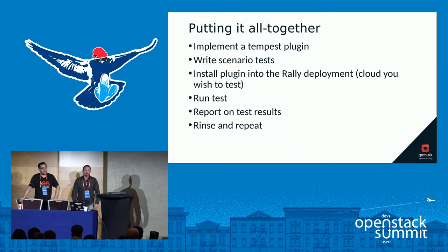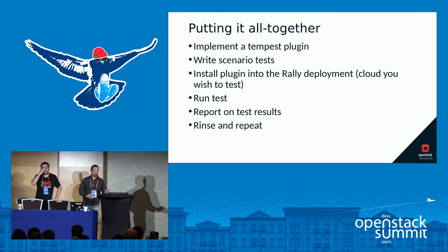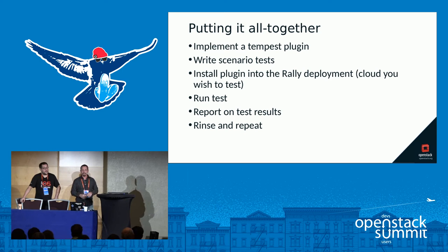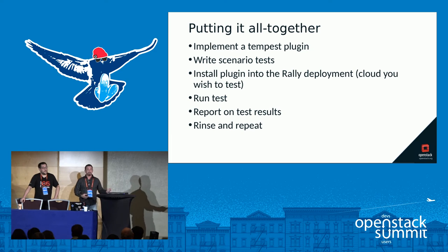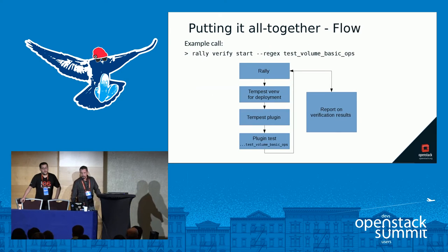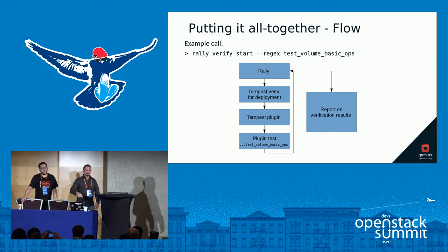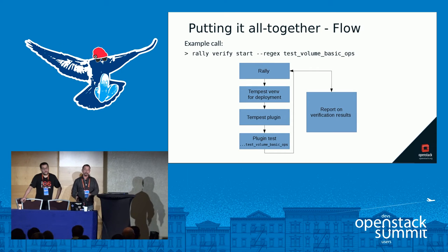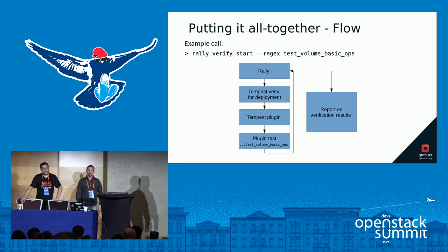Putting it all together: first, implement a Tempest plugin framework — the basic shell. Learn about the scenario framework. Write a test. Install the plugin into the Rally deployment — which is its copy of Tempest for that particular cloud. Run the test, report on the results, make tweaks, reinstall the plugin, and repeat. The flow: the call enters Rally, goes into the specific environment for your deployment, calls the regex expression which locates the test installed with your plugin, executes it, stores the data back in the Rally database, and then you can report on it.